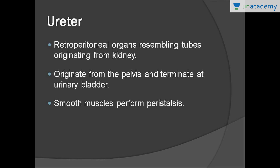That's briefly about the kidney. Now, just in brief about the ureter: it is a tubular, retroperitoneal structure originating from the kidney and extending to the urinary bladder. It has smooth muscle that forms peristalsis to help in the movement of urine. It's not a very important organ from an exam point of view.